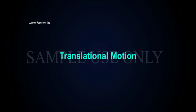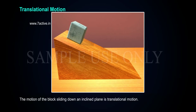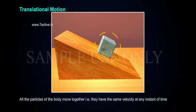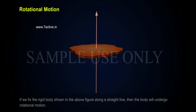Translational motion: The motion of a block sliding down an inclined plane is translational motion. All the particles of the body move together, that is, they have the same velocity at any instant of time. Rotational motion: If we fix the rigid body along a straight line, then the body will undergo rotational motion.